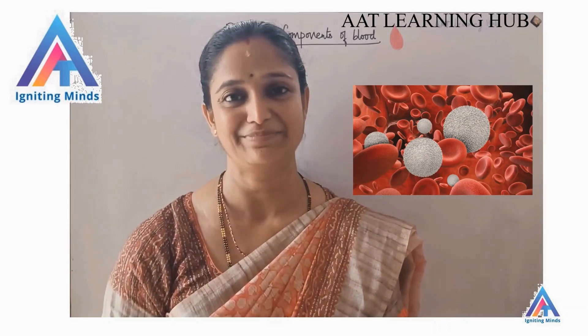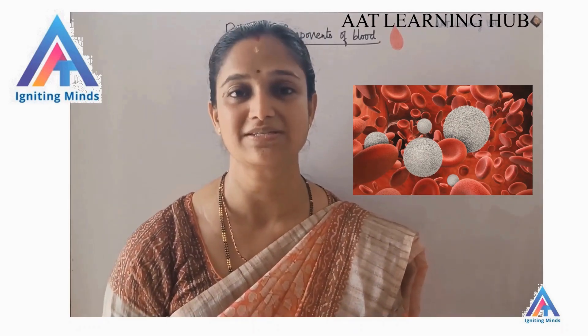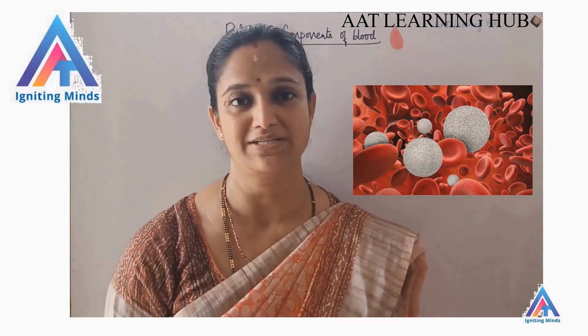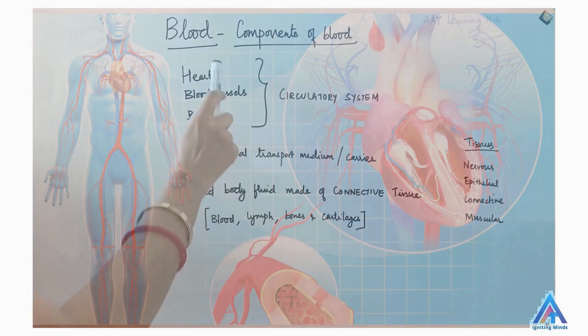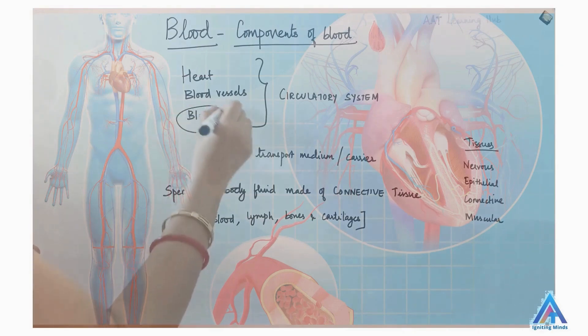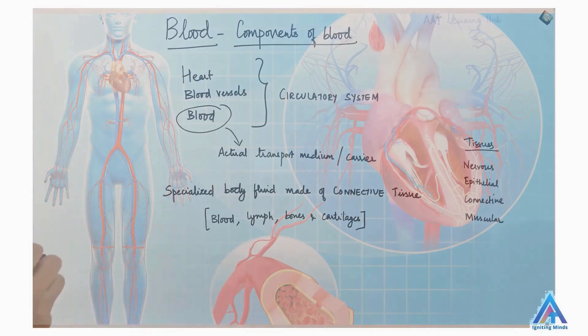Welcome back to AAT Learning Hub. I am Bhumika and today we are going to discuss about blood and components of blood. The circulatory system comprises of the heart, the blood vessels and blood. Blood is the actual transport medium that provides our body with oxygen and nutrients they need.